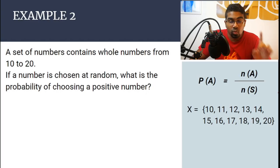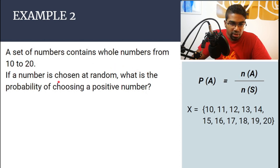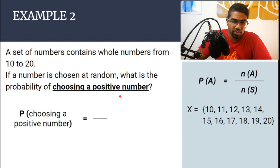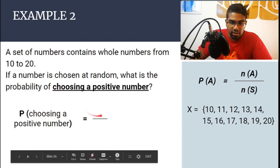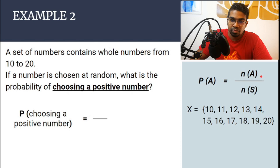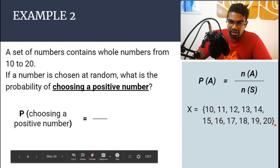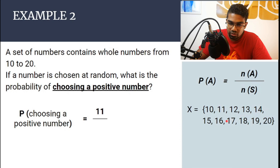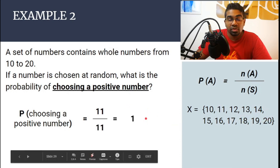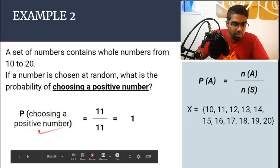When the probability of an event occurring is 1, that means that it will definitely happen. Let's look at the same example again, but with a different question. If a number is chosen at random, what is the probability of choosing a positive number? The first thing we need to do is determine what the event is — here it is choosing a positive number. NA: look at our sample, 10 to 20, all of them are positive numbers, so we have 11. NS, the total number of data, is also 11, which gives us 11 over 11, which is 1. The probability of choosing a positive number is 1 — it means that no matter what number you choose, it will definitely be a positive number.